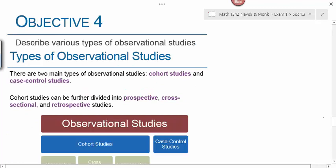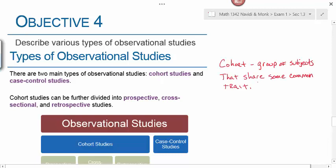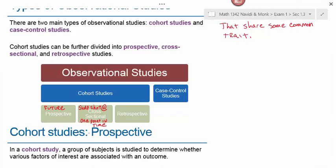The last objective covers various types of observational studies. There are two main types: cohort studies and case control studies. A cohort is a group of subjects that share some common trait. Cohort studies can be further divided into prospective, cross-sectional, or retrospective studies, all of which relate to time. A prospective study looks into the future. A cross-sectional study looks at one point in time like a snapshot. A retrospective study looks back into the past.